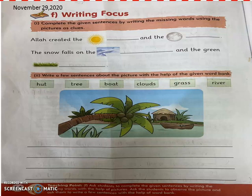What is the paragraph? 'Allah created the dash.' Now here you can see a picture of a sun. So the word 'sun' will come in the blank. 'Allah created the sun and the dash.' Now here a picture of the moon is given as a hint, so 'moon' will come in the blank.